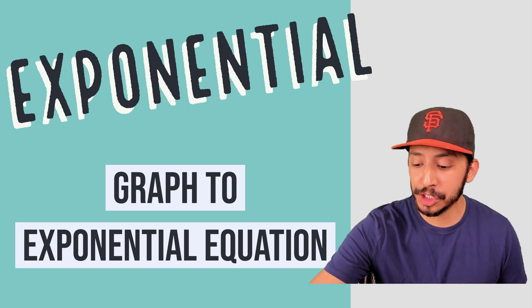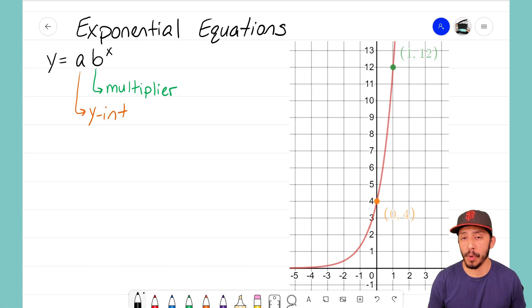I want to remind you that we have our generic form for our exponential equation, and that is y equals a times b to the x. Remember that a represents the y-intercept, sometimes we call that the zero term, sometimes we refer to that as the starting point. And b is our multiplier, or sometimes we say our growth factor.